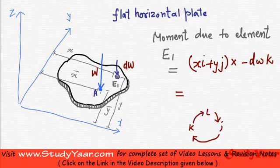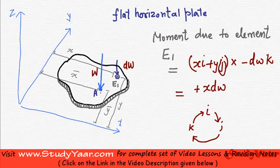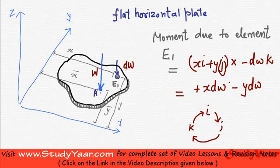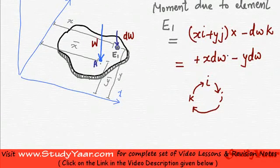So I have plus xdw. Then I have j into k. j into k is i. So I am going to have minus ydw. This is going to be, this is j, this is j.